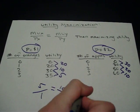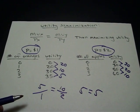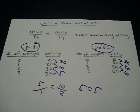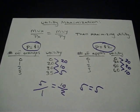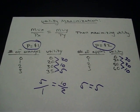Since both of those things reduce to 5, then this consumer is maximizing his utility. If it didn't come out to be equal, then the consumer wouldn't be maximizing their utility given their price and given the utility that they get from the consumption of the two products.